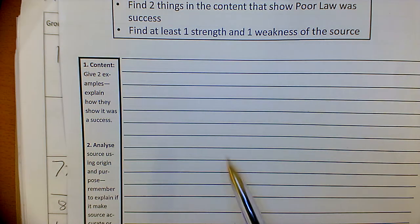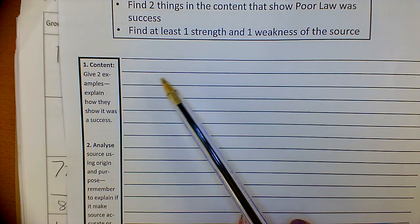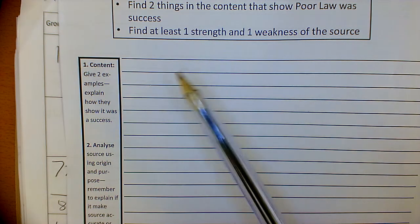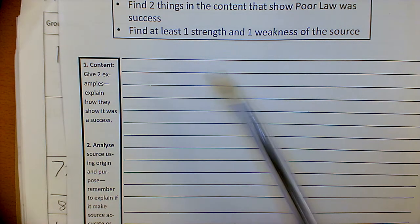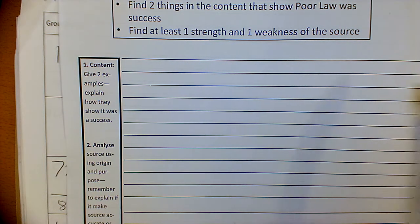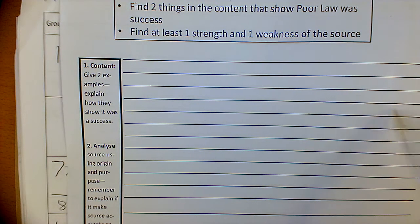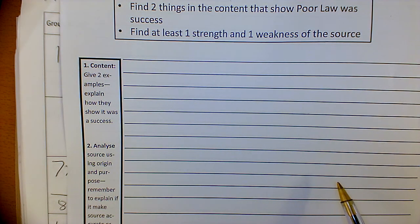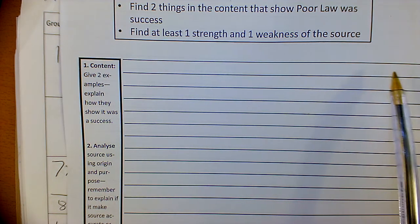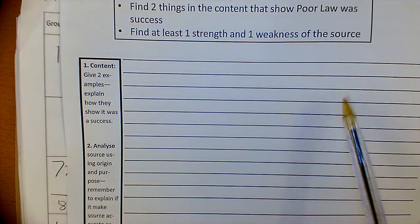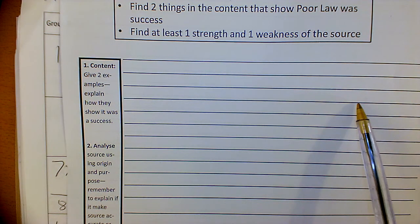So you might say something like: 'In source it says... this shows the Poor Law is a success.' Remember, when you're stating your strength and weakness, you have to say why it's a strength and a weakness. So why are historians good? Why are websites bad? And so on.